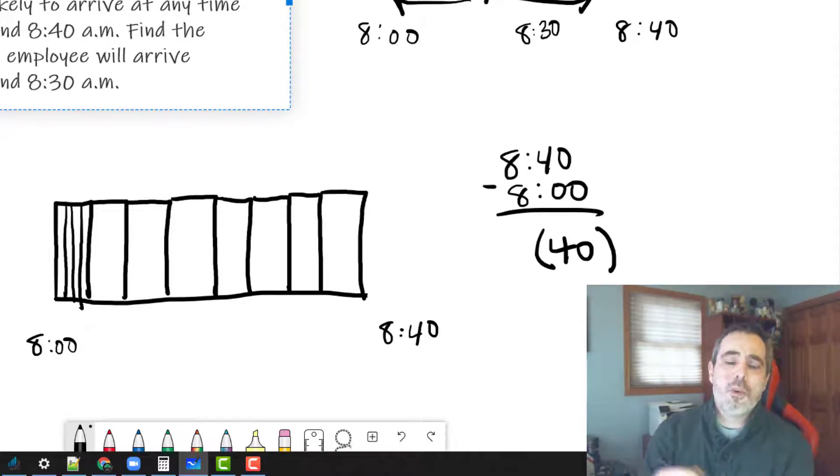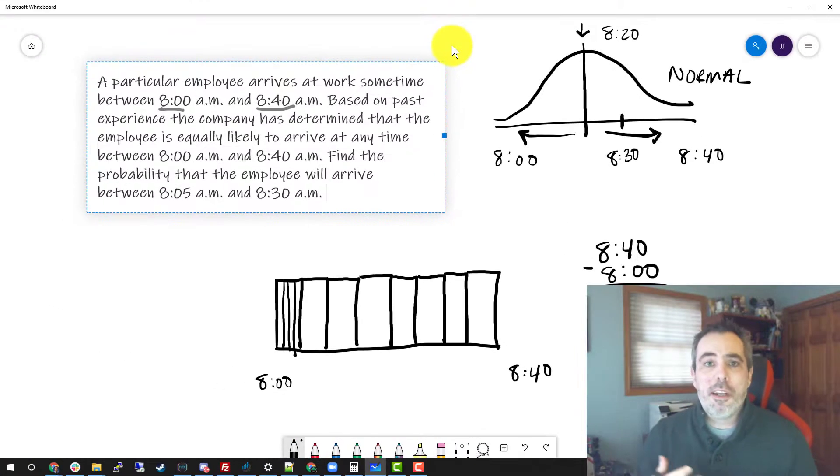So if I were to say, what's the probability that he is going to arrive at 8:25? That's one out of 40. What's the probability that he's going to arrive at 8:30? One out of 40.